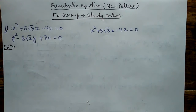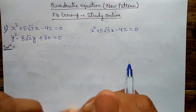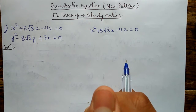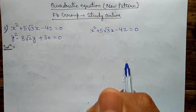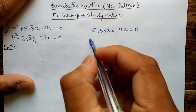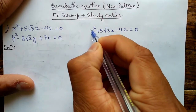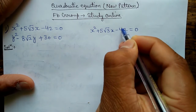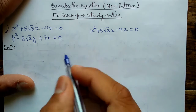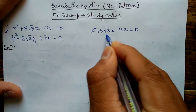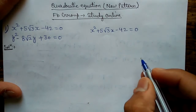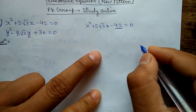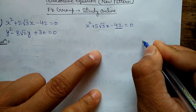As I told you in previous videos — those who have not watched them, please watch Part 1 and Part 2 first to get all the concepts. As I told you, whatever the coefficient of x² is, just multiply it with the constant. Here it is 1, so 1 multiplied by 42 gives 42. Whenever you see an equation like this where a square root appears, here it is 42.